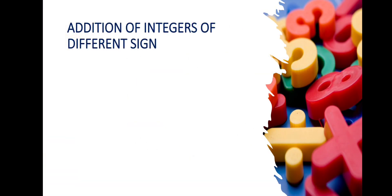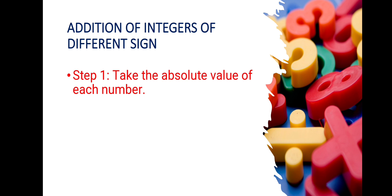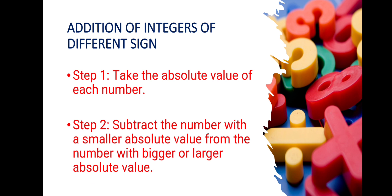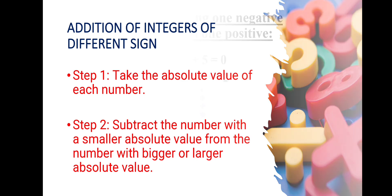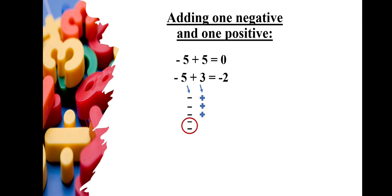Absolute value is used when adding integers of different signs. When adding one positive and one negative number, take the absolute value of each. The sign in the sum is taken from whichever number has the greater absolute value. For example, negative five plus positive five: both have absolute value five, so they are equal and the sum is zero.